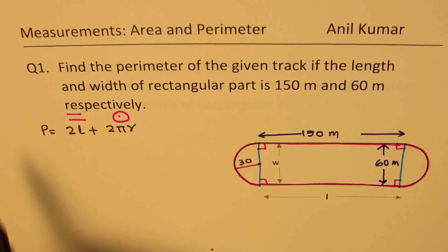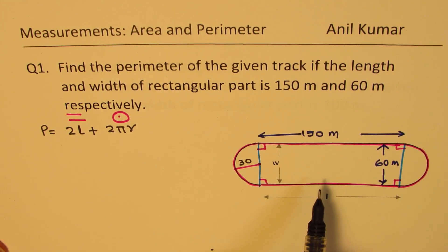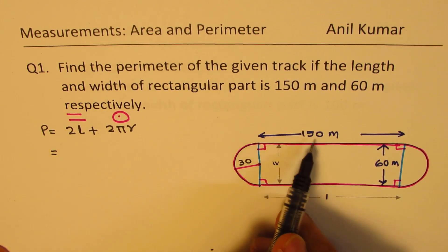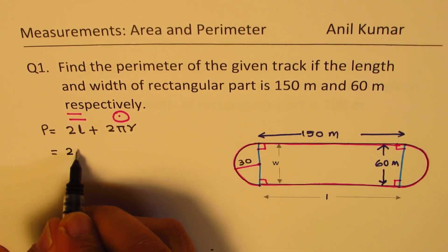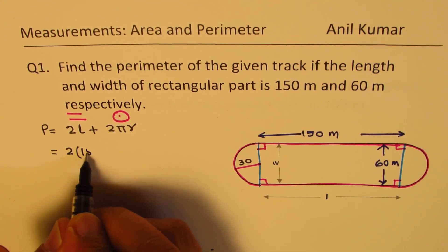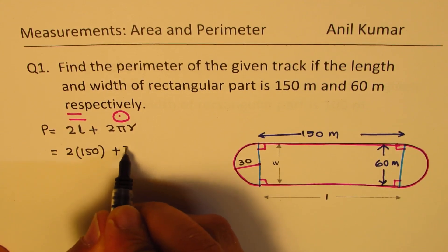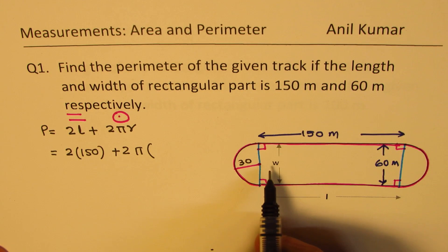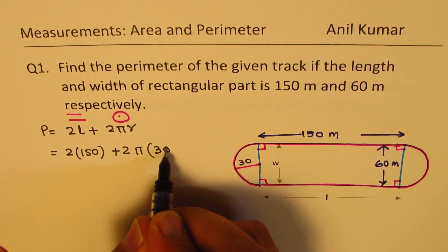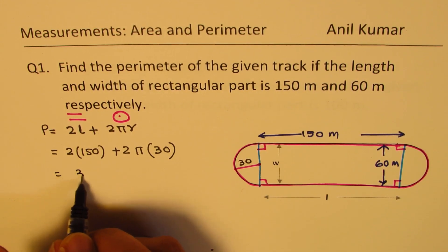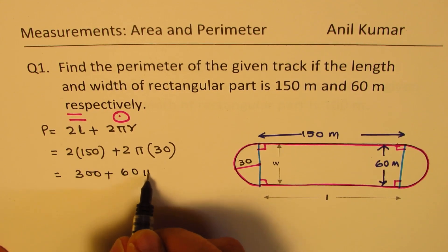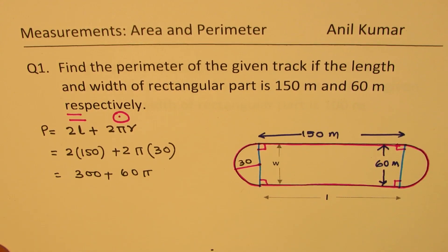So the total perimeter of this track is 2 times the length — length is 150 — plus 2 times π times the radius, which is half the width, so 30. That gives us 300 plus 60π as the perimeter for the given track.